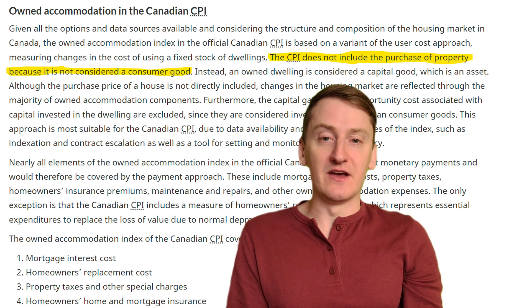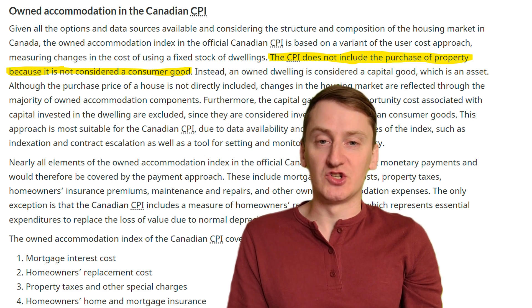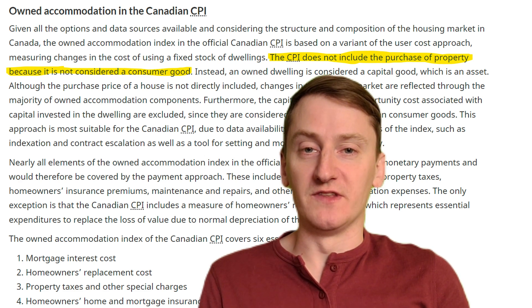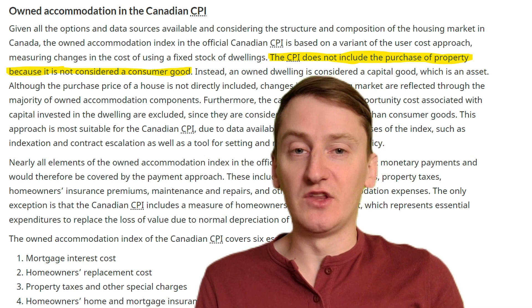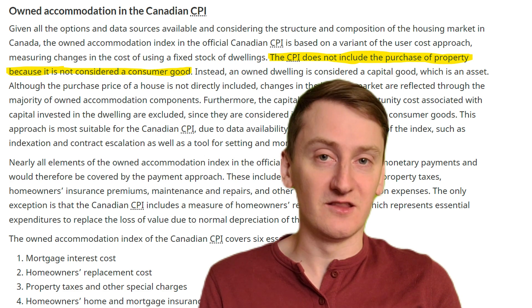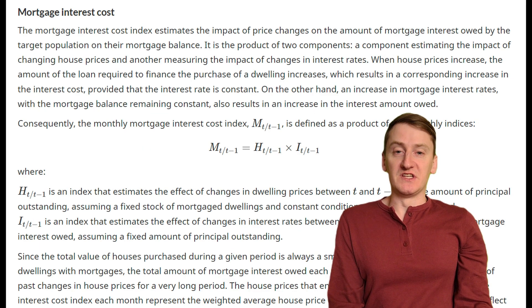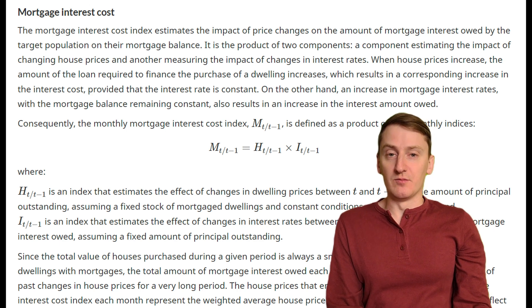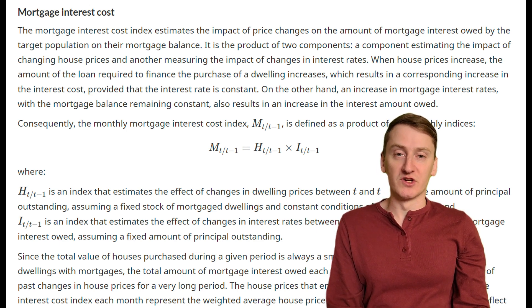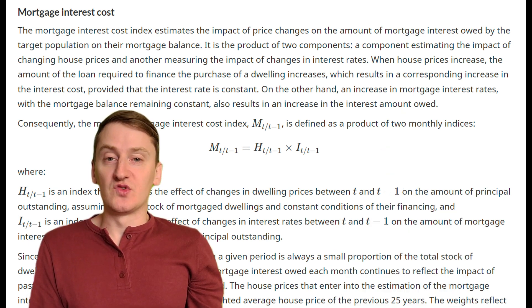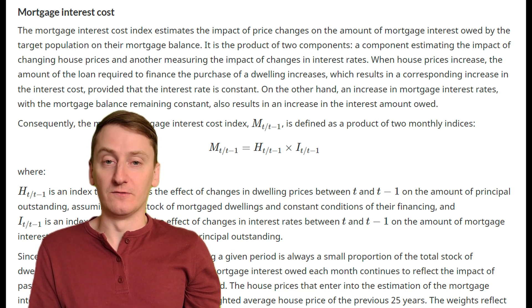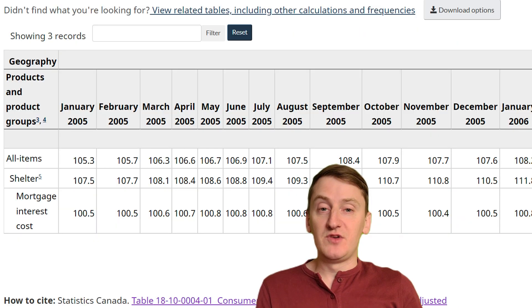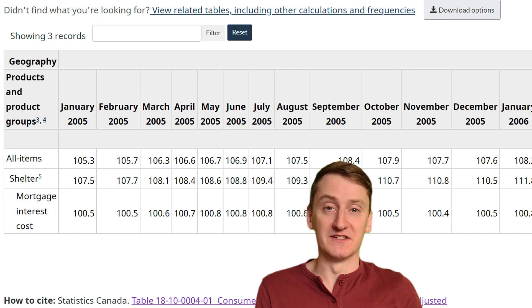Instead, CPI only looks at the day-to-day ownership costs — things like mortgage interest, maintenance, and insurance. In other words, the home ownership portion of the consumer price index assumes that you already own a home. Renters and owners are basically treated as separate species, with no accounting for the fact that some people might want to move from one to the other. One place that home prices are accounted for in shelter CPI is mortgage interest cost, which accounts for the cost of a mortgage using the average home price and the average interest rate on mortgages. The problem with this is, if home prices double and interest rates get cut in half, the CPI thinks there's been no impact on the cost of home ownership, even though it's gotten a lot more difficult for first-time buyers to get in. In fact, over the same period that home prices increased by 260%, mortgage interest cost only increased by 5.6%.